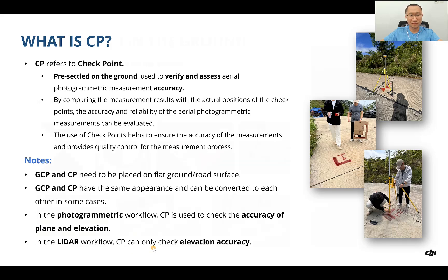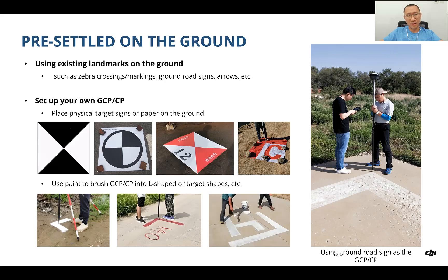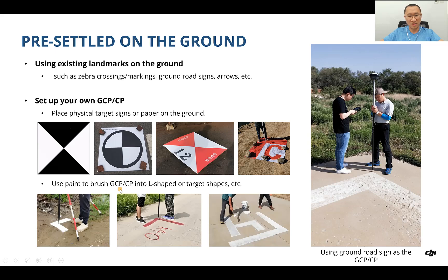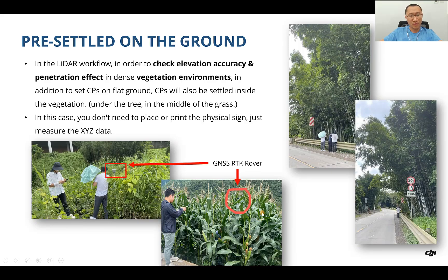For pre-settling on the ground, you can first use existing landmarks such as zebra crossings, road markings, or ground road sign arrows as GCP or CP. Secondly, you can set up your own GCP and CP by placing a physical target sign or paper on the ground, or using paint to create L-shaped or other target shapes. You can choose either the inner corner or the outer corner — it really depends on you.